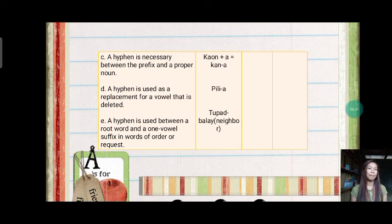Letter d. A hyphen is used as a replacement of vowel that is deleted. Example in Hiligaynon is pili-a. Pili hyphen and a. Pili-a. The meaning is to choose, which is the same in our language.